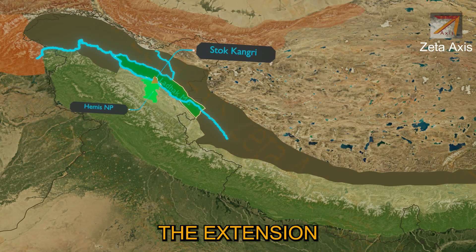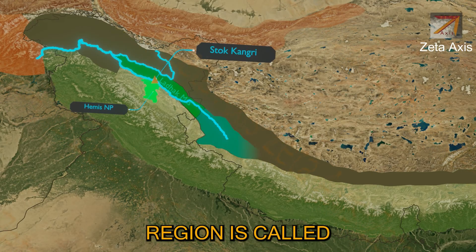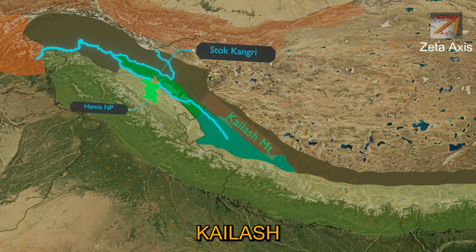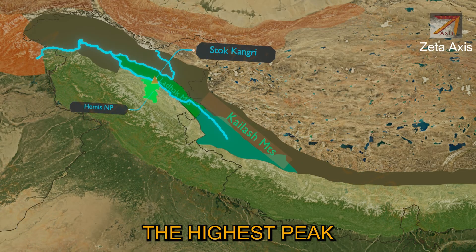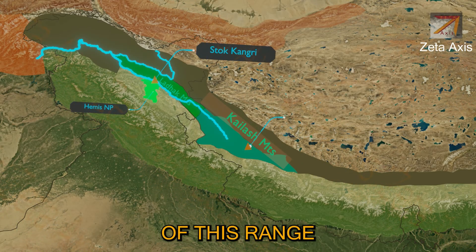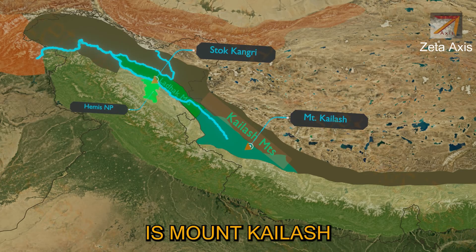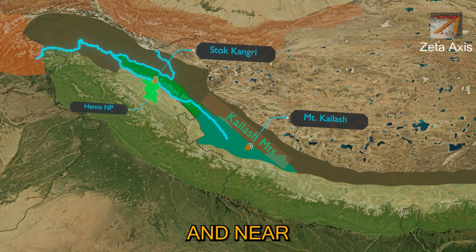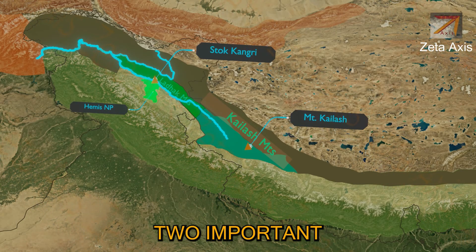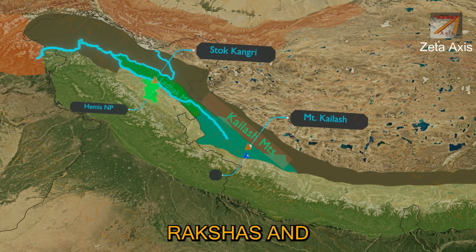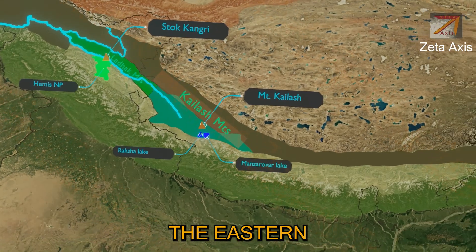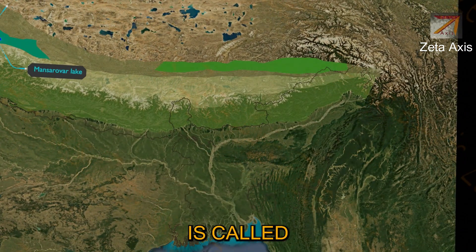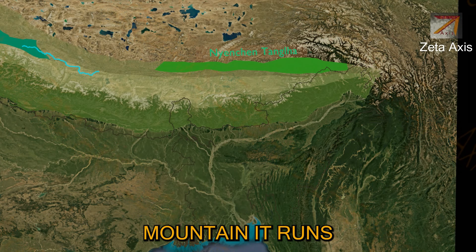The extension of the Ladakh range in the Tibetan region is called the Kailas mountain range, or Gangdise in Chinese. The highest peak of this range is Mount Kailas. Near Mount Kailas we have two important lakes: Lake Rakshastal and Lake Mansarovar. The eastern section of Trans-Himalayas is called the Nyenchen Tanglha mountain range, which runs north of the Brahmaputra river and parallel to the Himalayas.